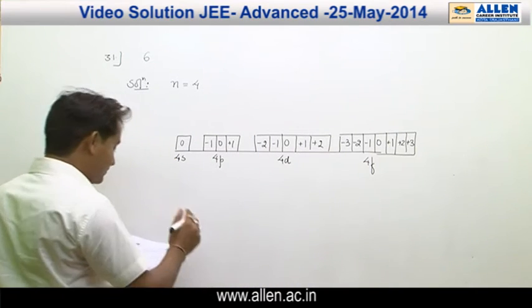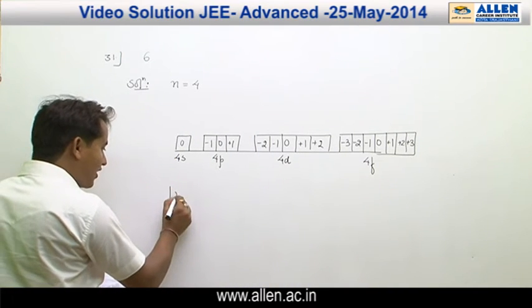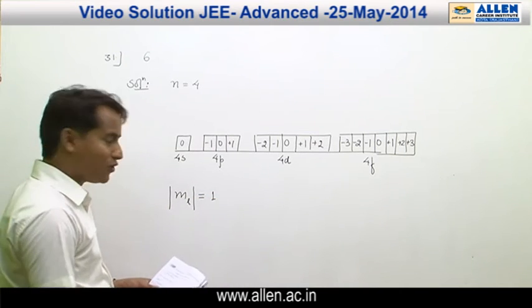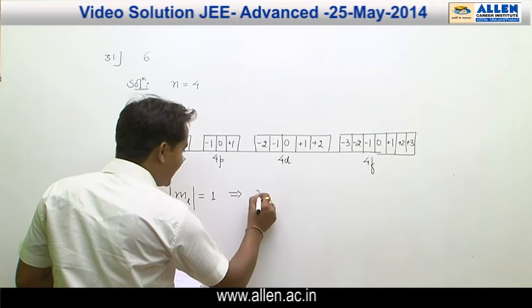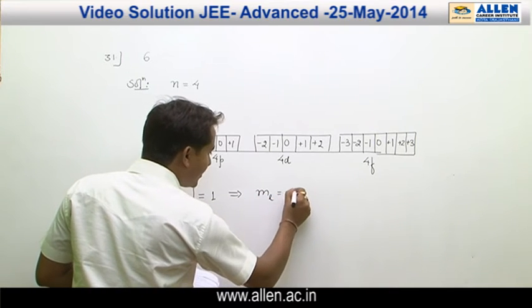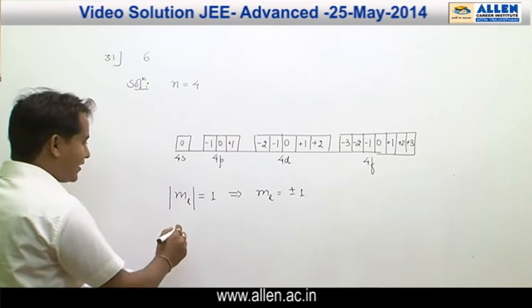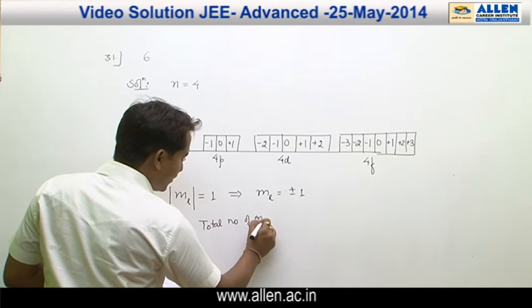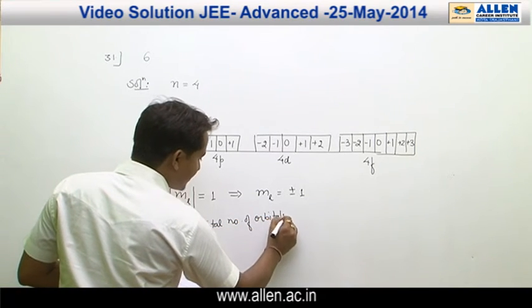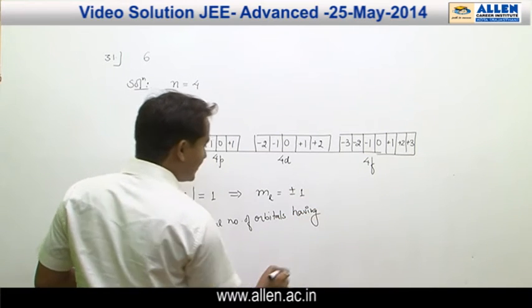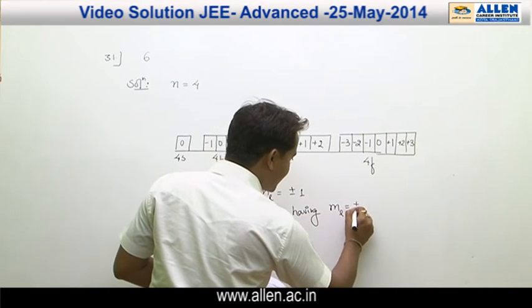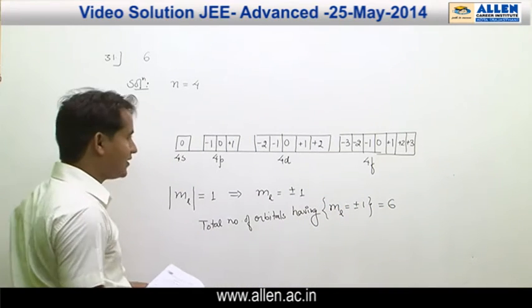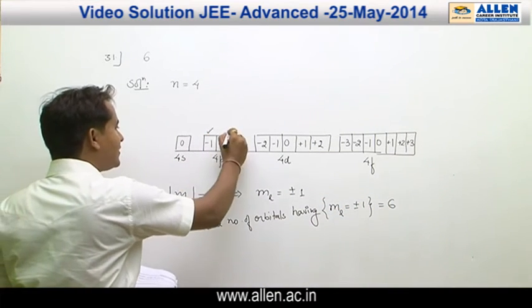In this question, modulus of m_l equal to 1 is asked. What is modulus of m means? m_l could be plus or minus 1. That means total number of orbitals having m_l equal to plus minus 1 is equal to 6. Here it is, this one, this one.